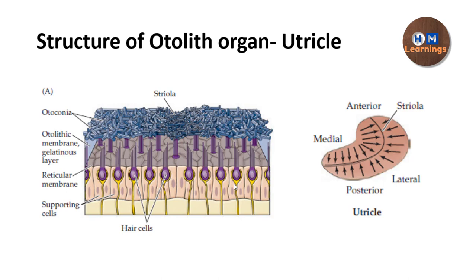The utricle is horizontally placed in the inner ear. Just as in the cochlea we have the organ of Corti with hair cells and supporting cells, similarly here we have the macula — the sensory neuroepithelium — containing hair cells and supporting cells in between. From the basal end of the hair cells, the efferent axon projects, forming the vestibular nerve.